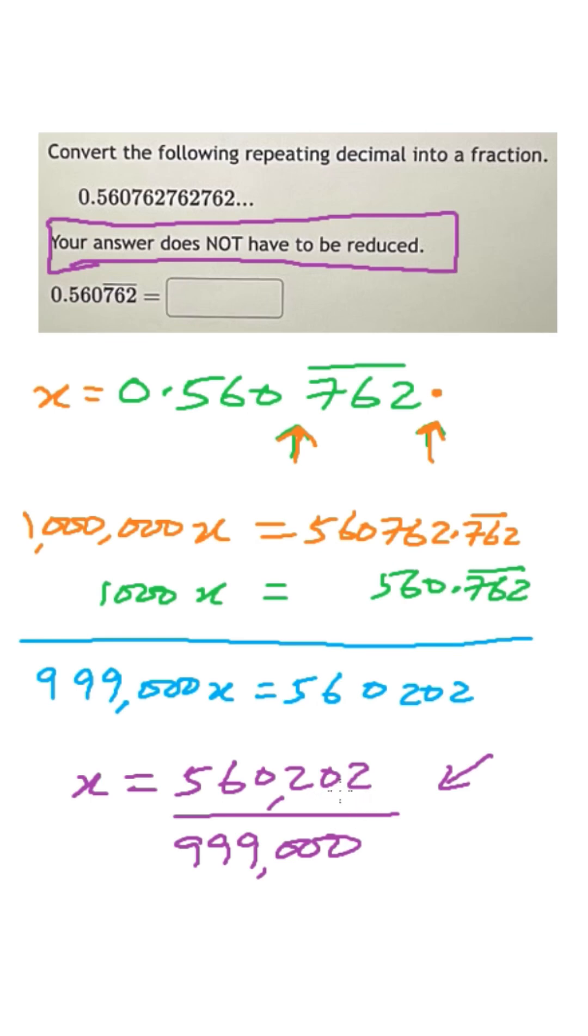Divide both numerator and the denominator by 2, and after that you will see it's still divisible by 3, both of them, and the final answer you will get is x is equal to 93,367 upon or over 166,500.